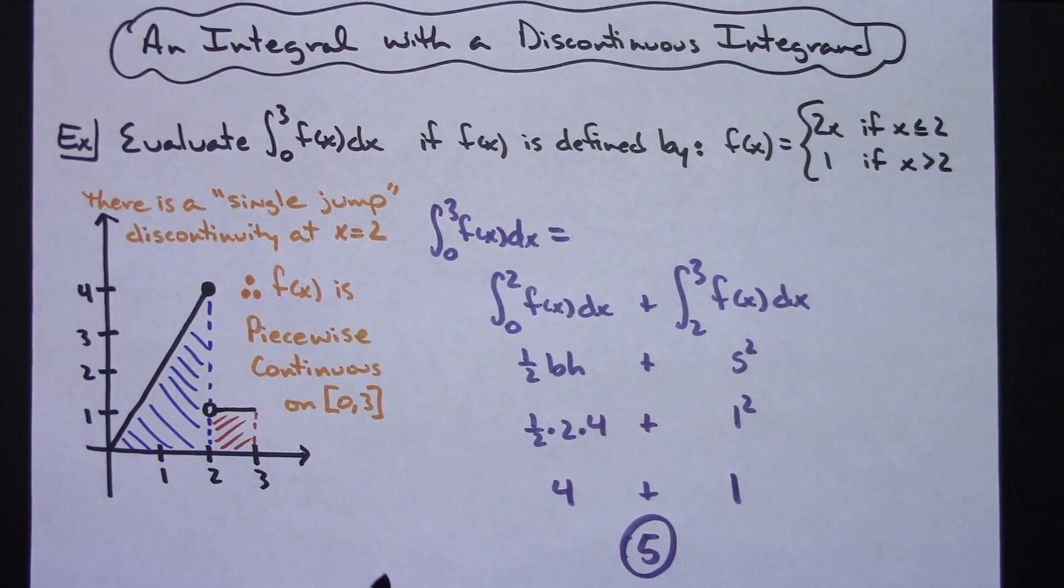So after you realize that you can consider this function to be piecewise continuous on that closed interval, then you can break that integral up into two nice little integrals and then just do a straightforward integral with your geometric shapes. So definitely a specific case here, looking at those piecewise functions and seeing how you can deal with your integrals.